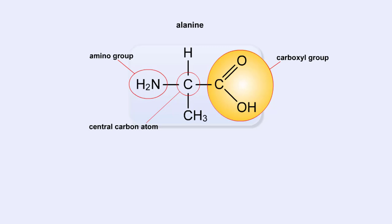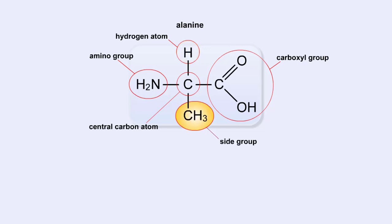The final two groups are easy. The first is a hydrogen atom that is bound to the central carbon atom. The second is the side group, which we discussed earlier. The side group is different for each amino acid, and it will affect how the amino acid acts when it binds to other amino acids.